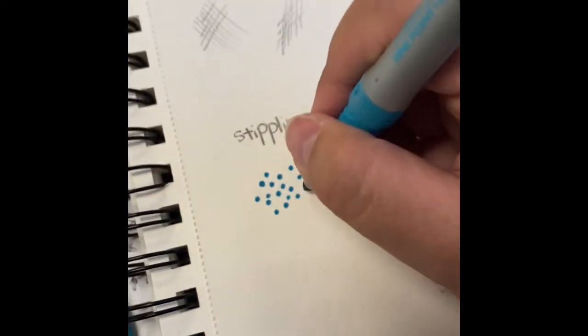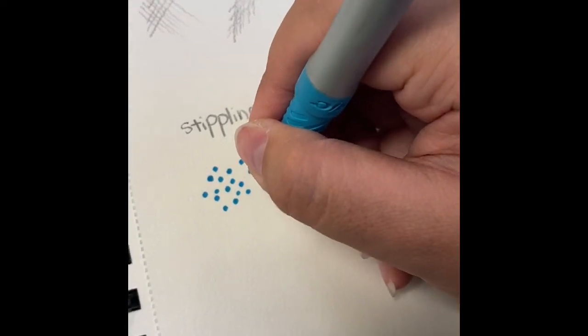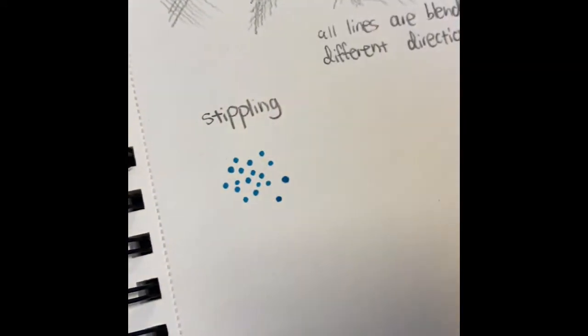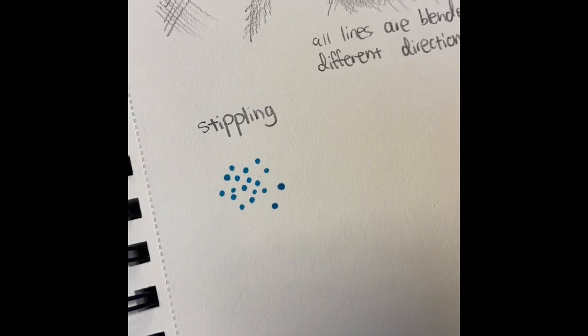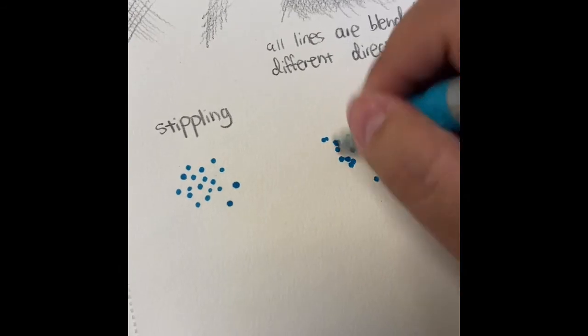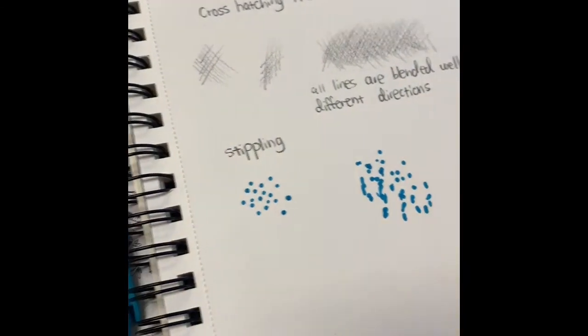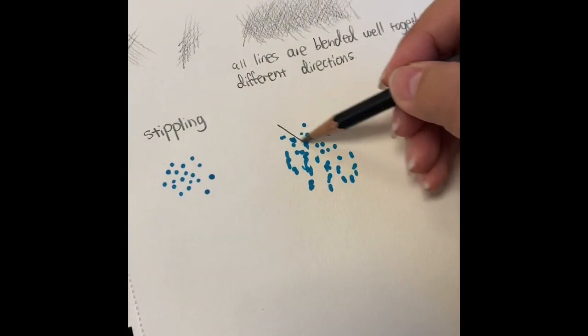And these should not be done too fast. So I'm lifting it directly up and not off to the side. You want them to be dots. You do not want to quickly do this because you're going to end up with tails. And we don't want tails on our stippling because that is bad craftsmanship.